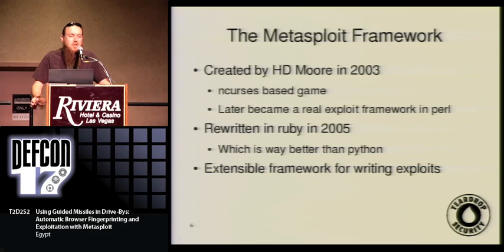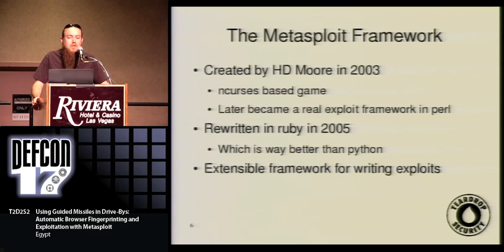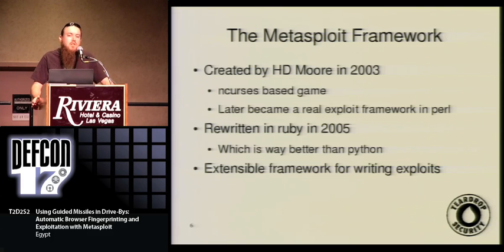Originally, Metasploit was a game — an end-cursus-based game that you could play anywhere. It later became a full-fledged exploitation framework written in Perl, but Ruby is a lot better. So in 2005, HD and the core dev team — Scape and Spoonm — rewrote the whole thing in Ruby, which is way better than Python. It's an extensible framework, and it's more than just using exploits. It makes it a lot easier to write exploits, and there's a lot of non-exploit tools available within Metasploit.